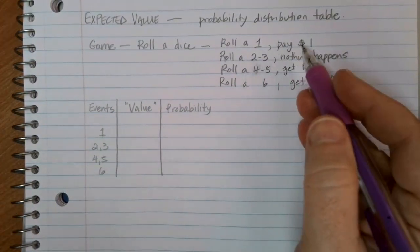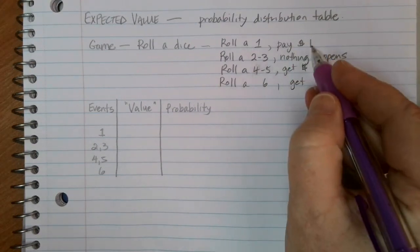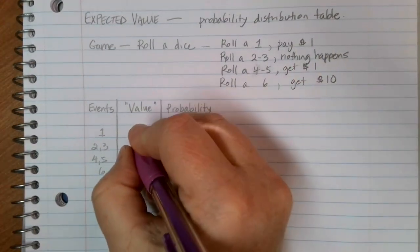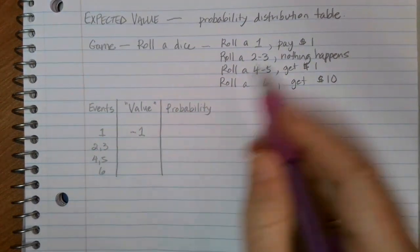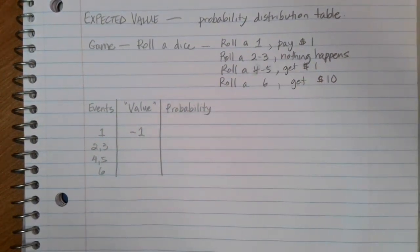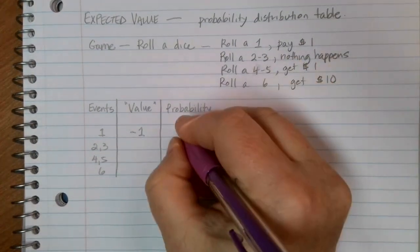The value of this is what's happening over here. If I roll a one, I'm going to have to pay one dollar. So my value would be negative one. I'm going to lose a dollar with this particular roll. The probability of rolling a one on a six-sided dice is one out of six.